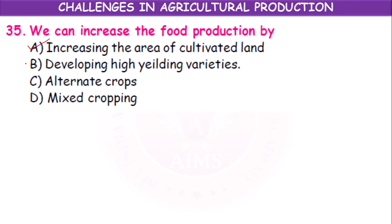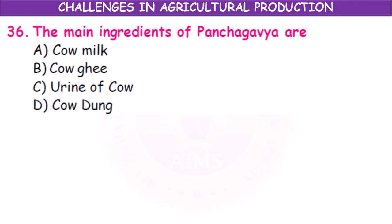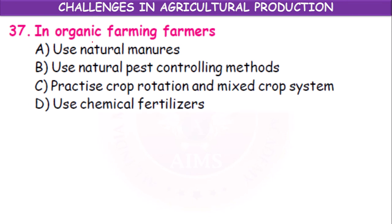Increasing the area of cultivation, developing high-yielding varieties, alternate crops, and mixed crops are all correct methods. In organic farming, the steps include use of natural manures, use of natural pest-controlling methods, and the practice of crop rotation and mixed crop systems. Use of chemical fertilizers is not part of organic farming.